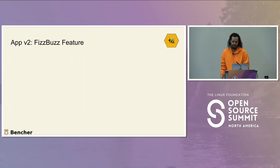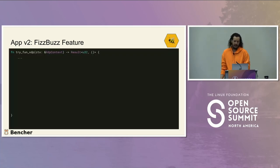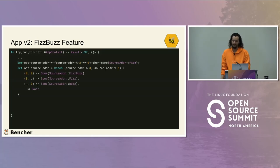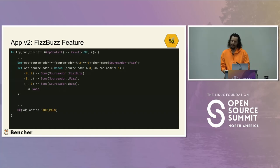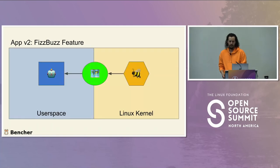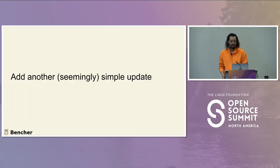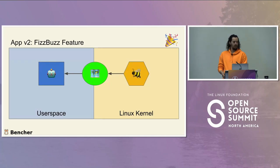On the eBPF side, it stays very similar — we just implement FizzBuzz: modulus three, modulus five, and return XDP pass. That gets pushed onto the queue. On the user space side, we actually don't have any changes — it's just going to log whatever comes through.